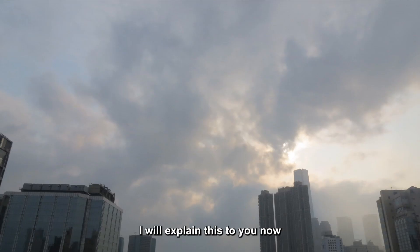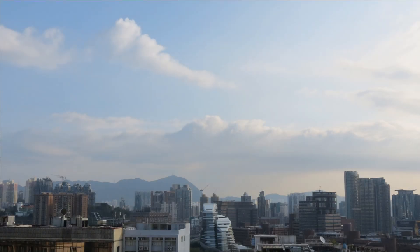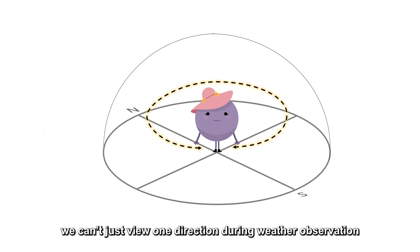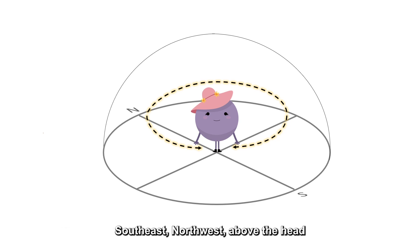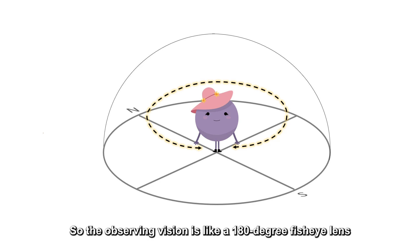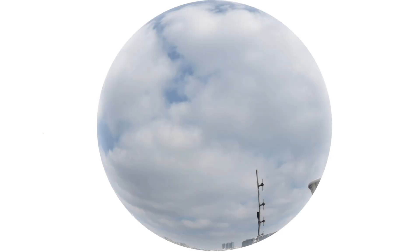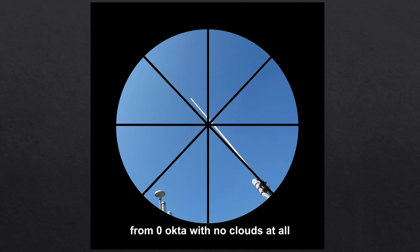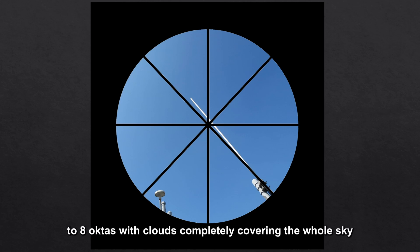Why use octa? I'll explain this to you now. As observers, we can't just view one direction during weather observation — southeast, northwest, above the head — all angles must be observed in detail. So the observing vision is like a 180-degree fisheye lens. We'll divide this circle into eight equal parts, from zero octa with no clouds at all to eight octas with clouds completely covering the whole sky.